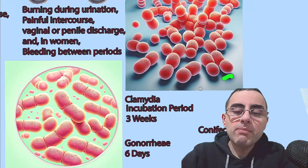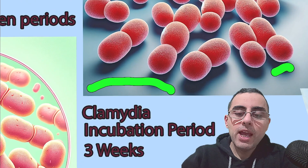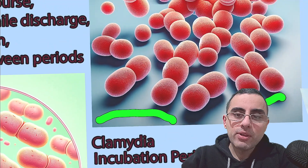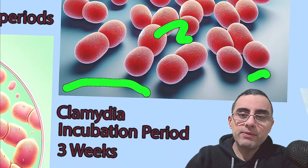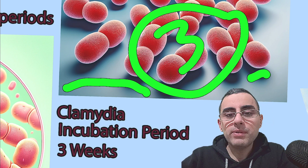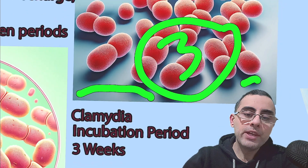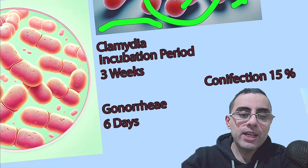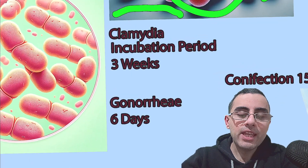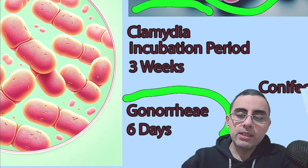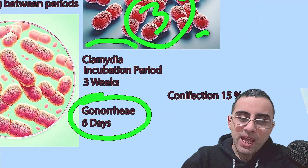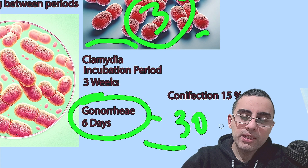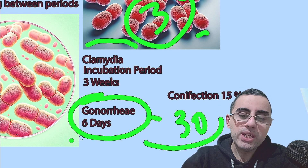The incubation period is the time from infection to first symptoms, if symptoms occur at all. For chlamydia, the incubation period is about three weeks. For gonorrhea it is much less — around six days, though in individual cases it can be up to 30 days. Usually it is within six days for gonorrhea.